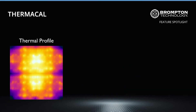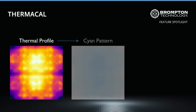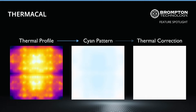Through dynamic calibration, each LED panel is profiled and thermal effects are separated from the optical calibration. This means any ThermaCal correction is applied at the panel level, making it panel-specific, allowing modules to be freely swapped without introducing any visual artefacts.